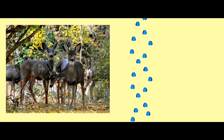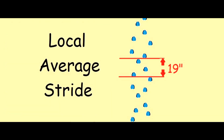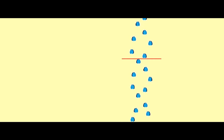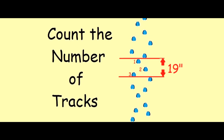Now let's say that we found these sets of tracks when a herd of deer walked by and we want to know how many deer walked by on this trail. In order to do that, you need to know your local average stride. First, draw a line in the sand at the tips of one of the hooves. Now measure backwards that local average stride and put another line in the sand.